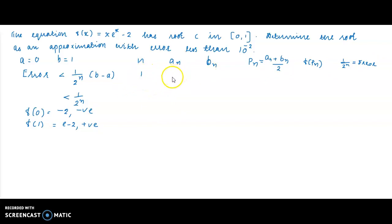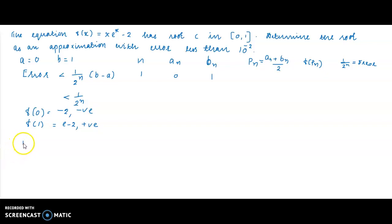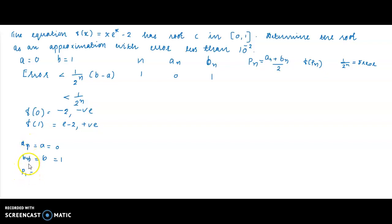For n = 1: a₁ = 0, b₁ = 1. The midpoint P₁ = (0 + 1) / 2 = 0.5.